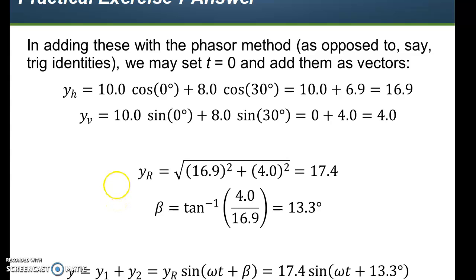Essentially, this is a repeat of the prior problem, but it shows you where you get the different values from and how you use the E sub h and E sub v. You use the respective cosine and sine of the angle to get the values. The square root of these two squared gives you the amplitude, and then the inverse tangent of this value over this value gives you the phase difference. For this particular one, you end up with this form of the equation right here, yr equals sine omega t plus beta. For the yr, 17.4, this for the phase difference here.